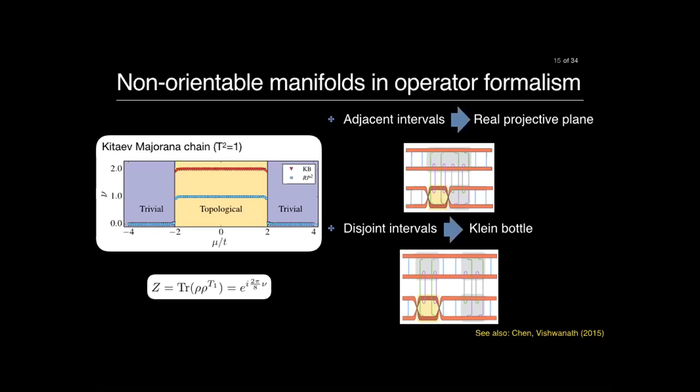Question: For a many-body Hamiltonian, do you have to solve it exactly or can you use an approximate density matrix? Answer: The input is the reduced density matrix of some interval. You definitely can compute it numerically using DMRG or similar methods.